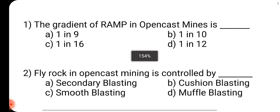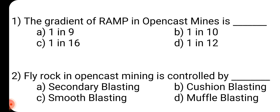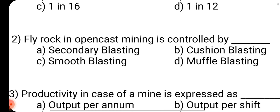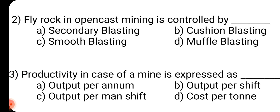Question number 1: Gradient of ramp in opencast mine is dash. Answer is B: 1 in 10. Question number 2: Fly rock in opencast mining is controlled by dash. Answer is D: Muffle blasting.